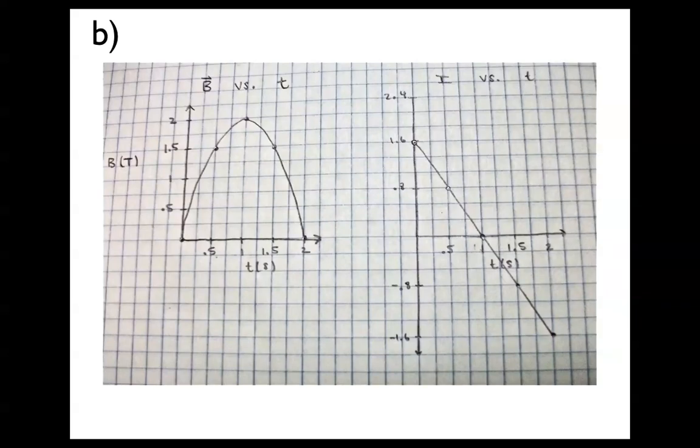And for part B, we're supposed to graph the B field versus time and the current versus time. You can see that the B field versus time is an upside-down parabola shape, and the current versus time is just a downward slope.